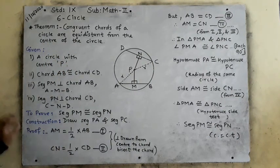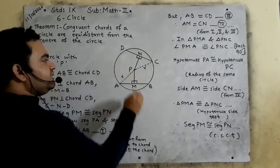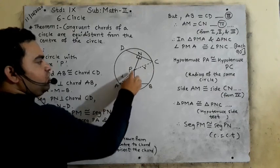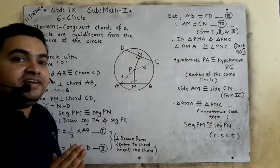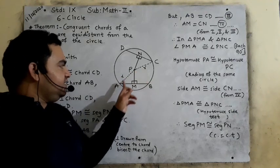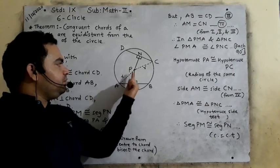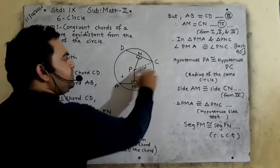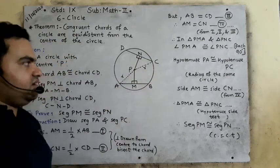First we will do the construction. We can join anytime the center of the circle to one endpoint of a chord — that will be a radius. So we draw segment PA and segment PC. PA is the radius of the circle, and similarly PC is also a radius of the same circle.